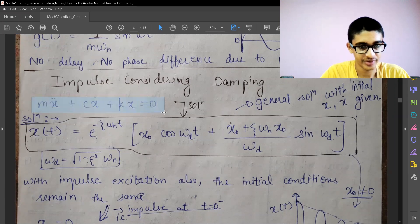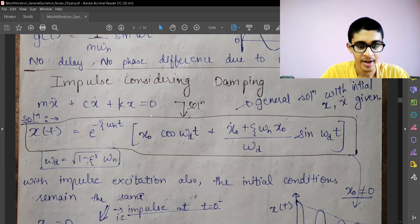This is the equation of motion for that, and we have assumed that the impulse is applied at time t equals 0 minus.